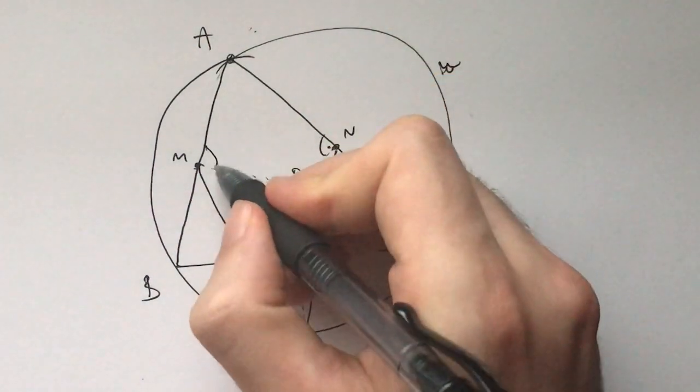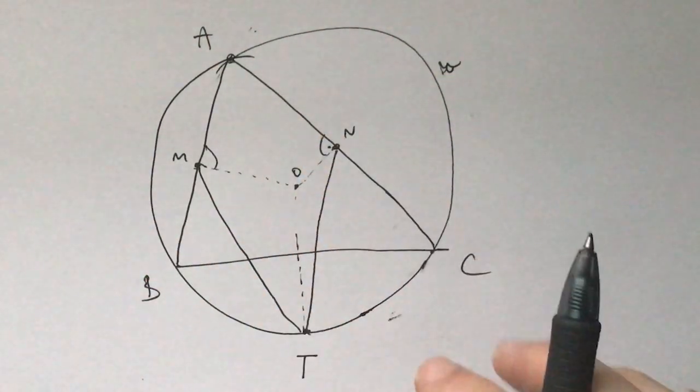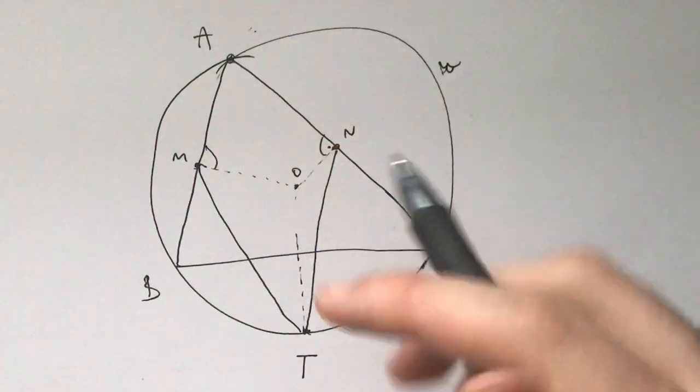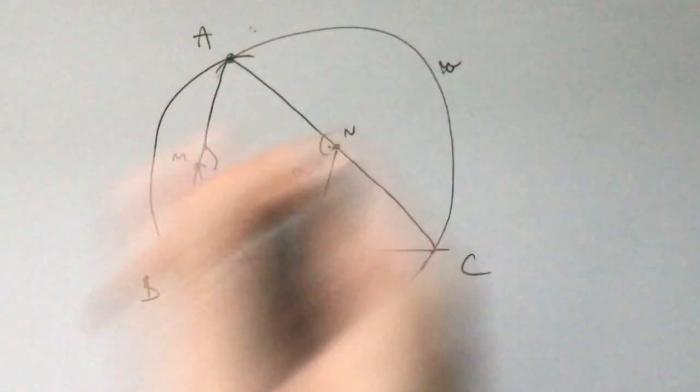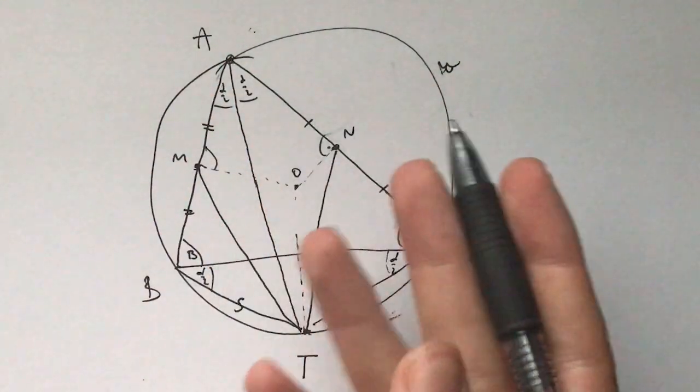So now, before we do that, notice that what do we know about this triangle, these two triangles like A, M, T and A, N, T? They don't seem very well known, at least not to me.